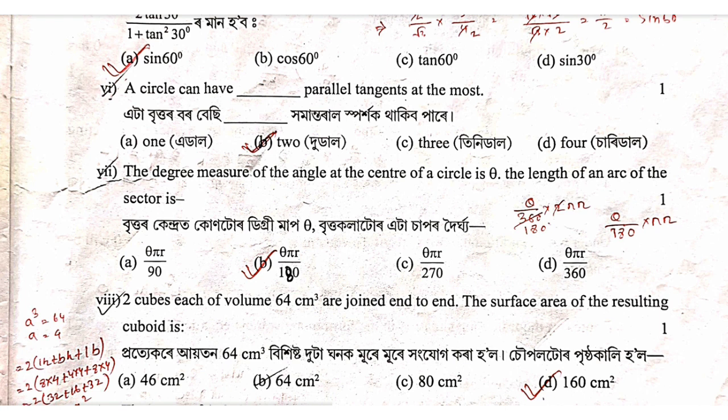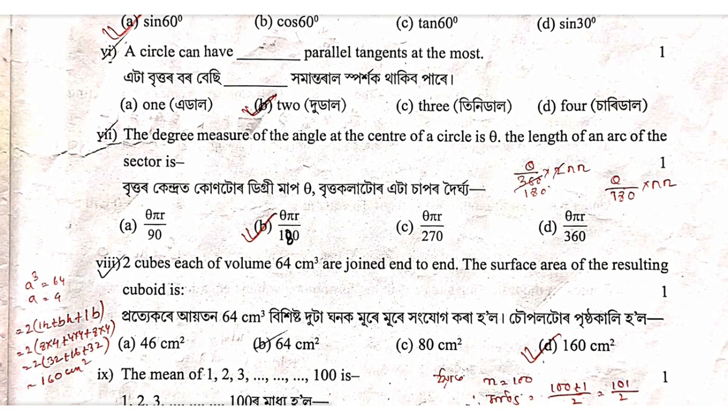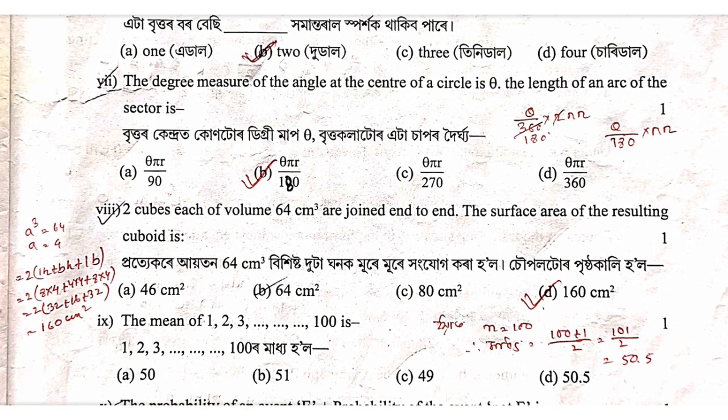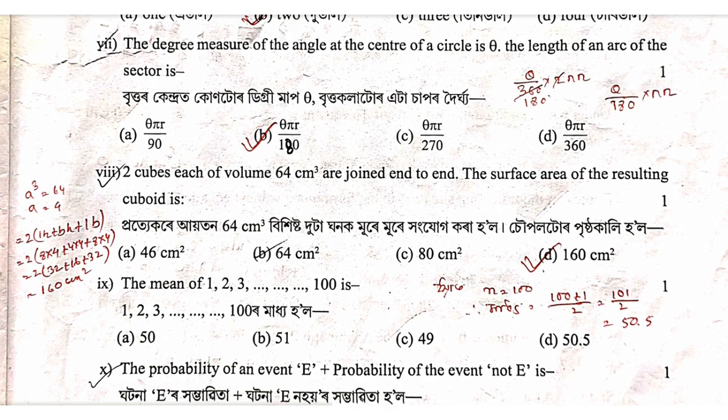The next question asks for conversion of an angle in degrees to radians. We know that 360 degrees equals 2 pi radians. So theta in radians equals theta by 180 into pi.